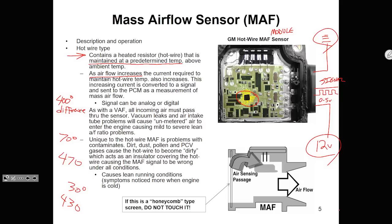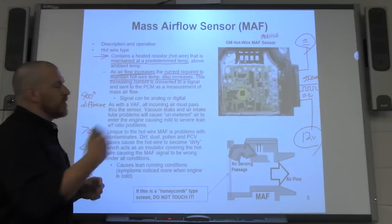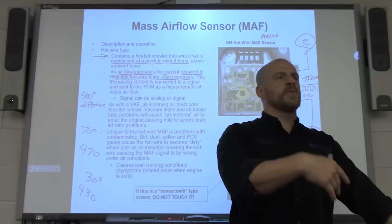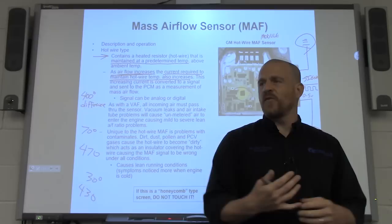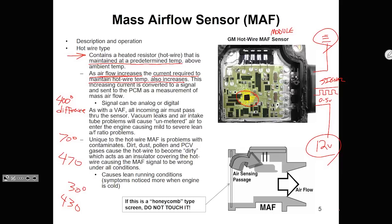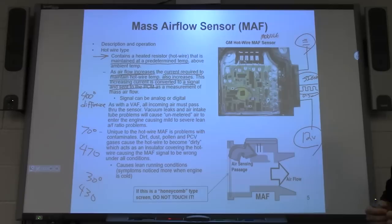So it's maintaining this temperature difference. As airflow increases, the current required to maintain the hot wire temperature also increases. As airflow increases, current flow increases. As airflow decreases, current flow decreases. What else changes would be the temperature of the air — a colder air temperature would cool it more, requiring more current to maintain the temperature. So we can account for air temperature as well with this. The increasing current is converted to a signal and sent to the PCM as a measurement of mass airflow.